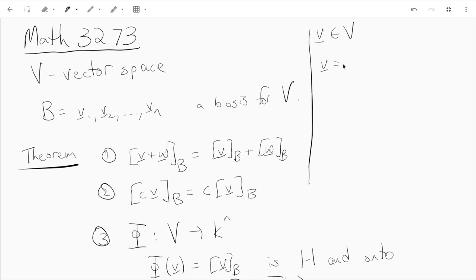We can solve this equation and find all the coordinates which are just the scalars that when you combine the scalars with the vectors in the basis you get the vector back.